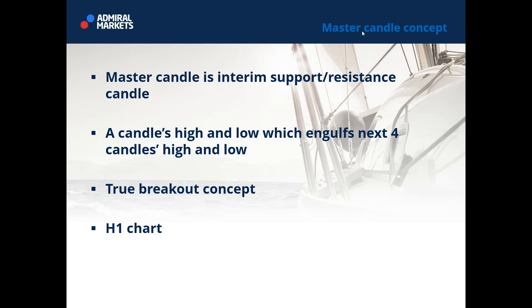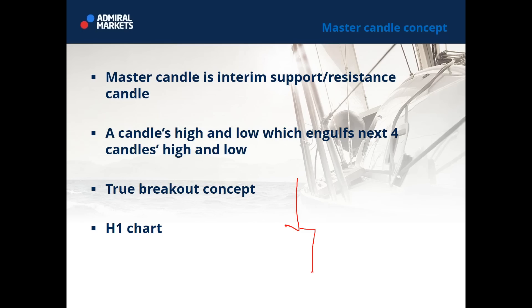First we need to go with the master candle concept, because true breakouts are efficiently derived from the master candle. The master candle is an interim support and resistance candle. When you see a master candle, you know that it provides support and resistance — the strongest interim support and resistance, even stronger than pivot points. Let's say you see on the chart one big candle that contains all other candles within it. Those two levels — the high and low — are the most important, because this is the mother candle or master candle. It marks the most powerful interim support and resistance at that point.